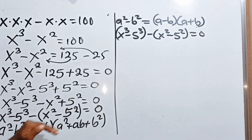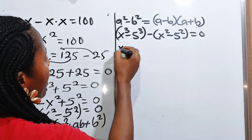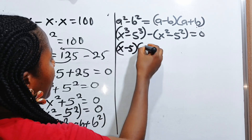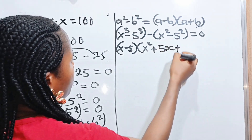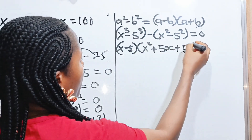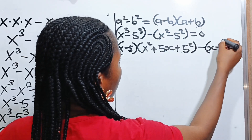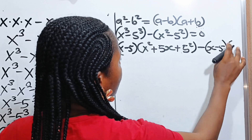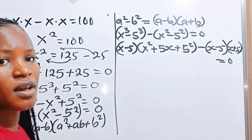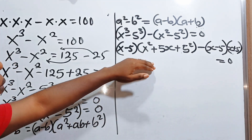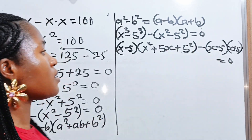We are going to expand this using those identities. We have x minus 5, multiplied by x squared plus 5x plus 5 squared, then minus, for this we have x minus 5 multiplied by x plus 5, and everything is equal to 0. You can see we have x minus 5 here, and x minus 5 on the other side as well.